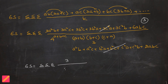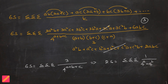After cancellation, 6S becomes the triple summation of 3/4^(a+b+c). Cancelling the 3 against 6 gives 2S equal to the triple summation of 1/4^(a+b+c). Since 4^(a+b+c) = 4^a · 4^b · 4^c, we can write this as the triple summation of (1/4^a)(1/4^b)(1/4^c).